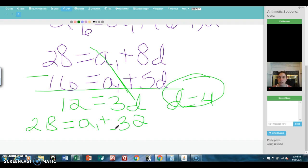I'm going to subtract 32 from both sides. And when I do that, I'm going to get that the first term A1 is equal to negative 4. A1 is equal to negative 4. And that would be my final answer for this one.